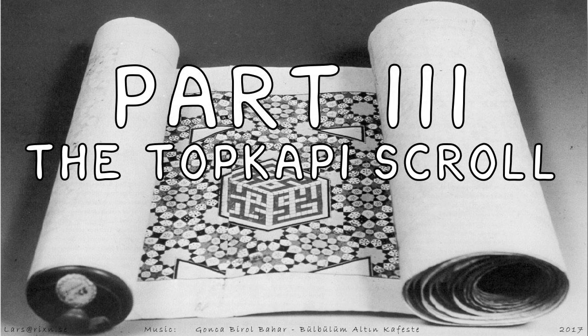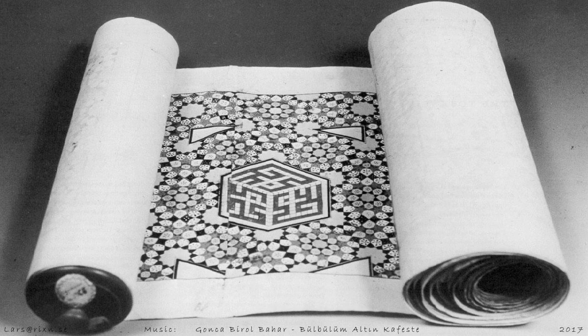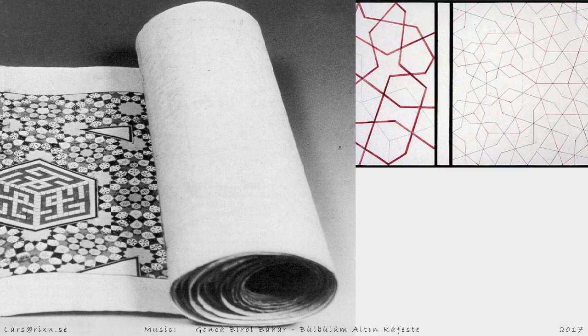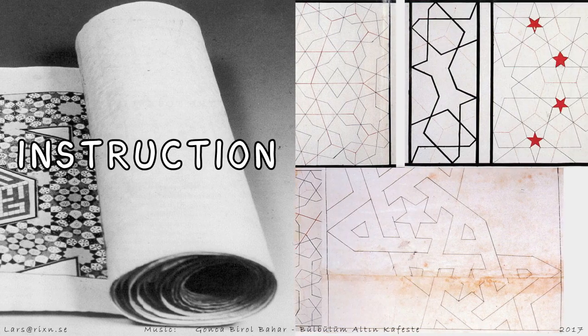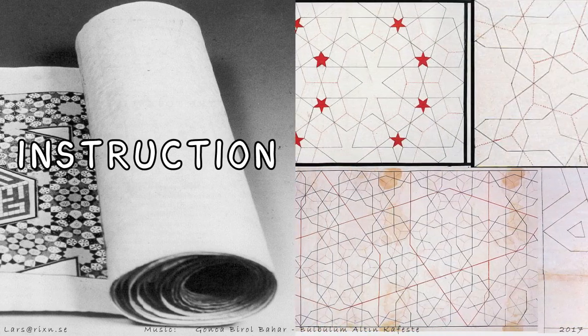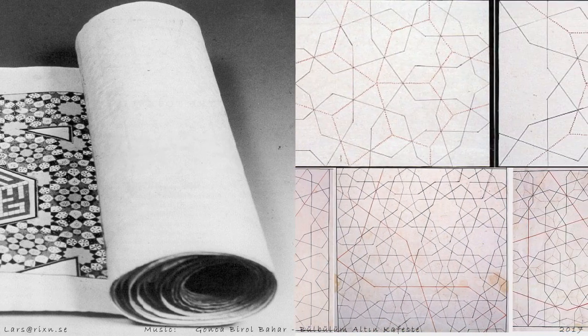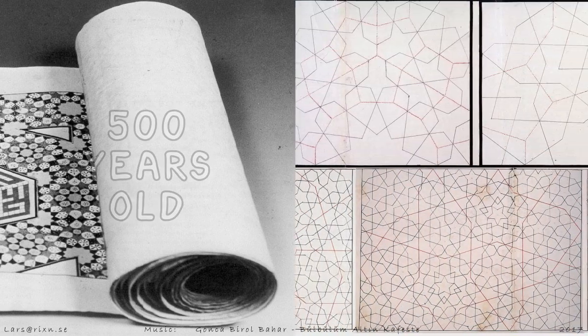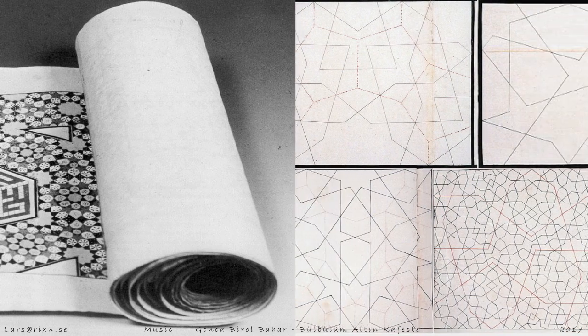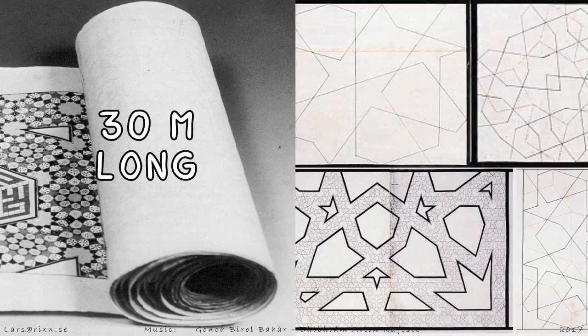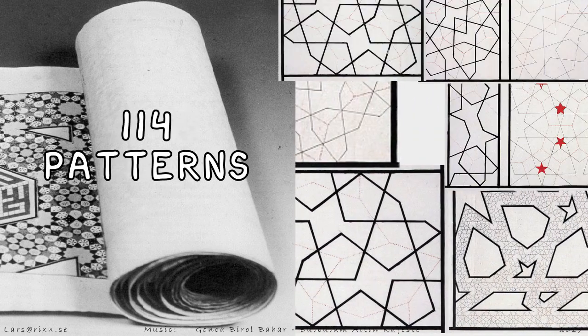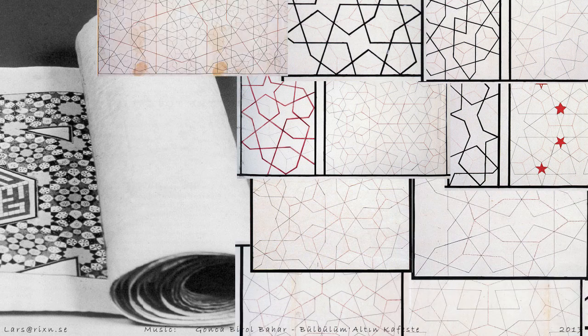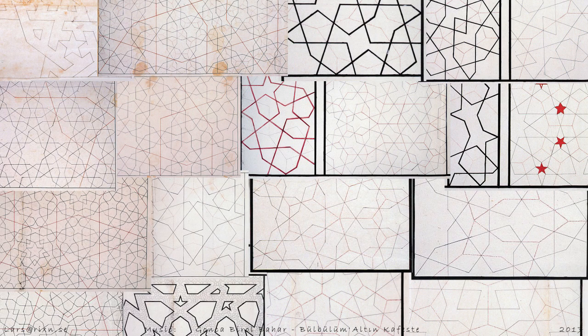Part 3: The Topkapi Scroll. The Topkapi scroll is an incredible historical document. It's a Middle Eastern instruction for creating architectural patterns. It was compiled during the Timurid era, around 500 years ago. The scroll is almost 30 meters long and consists of 114 patterns. 16 of these panels have a five-fold pattern.